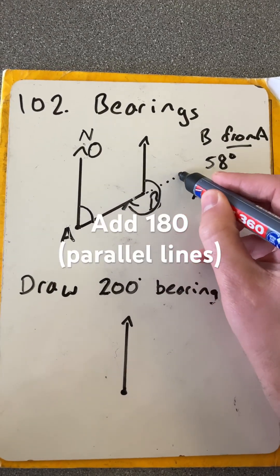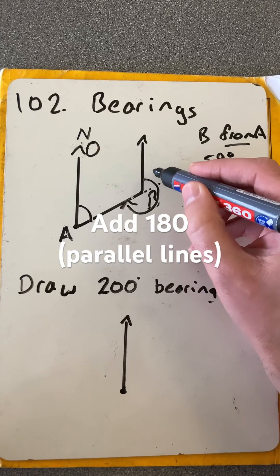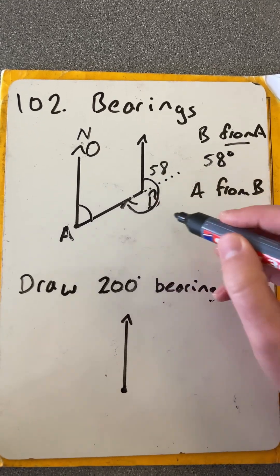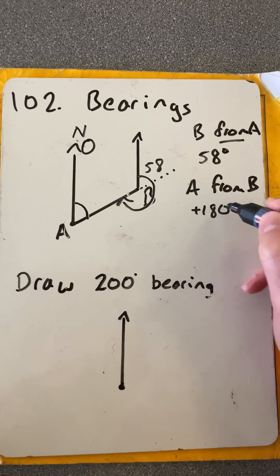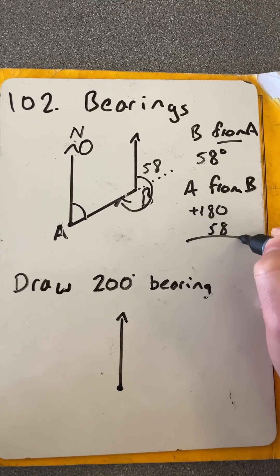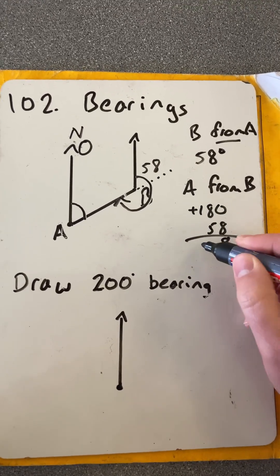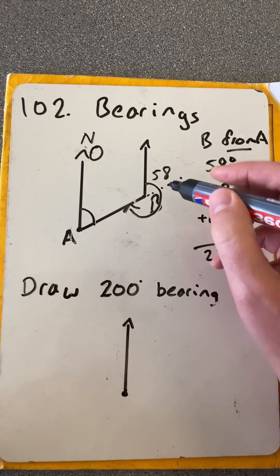Now if we know our parallel lines, this angle here will also be 58. So all we're doing is adding 180 onto 58. So they will get 238.